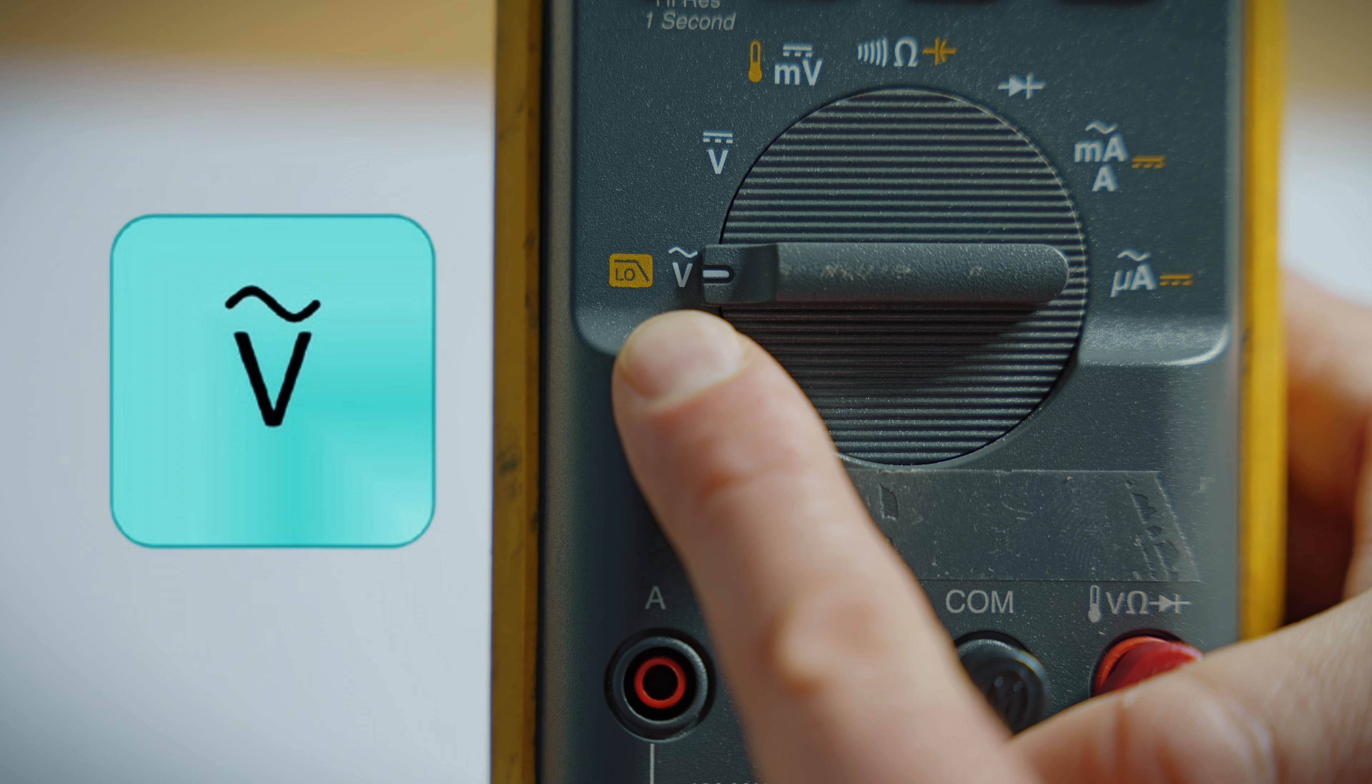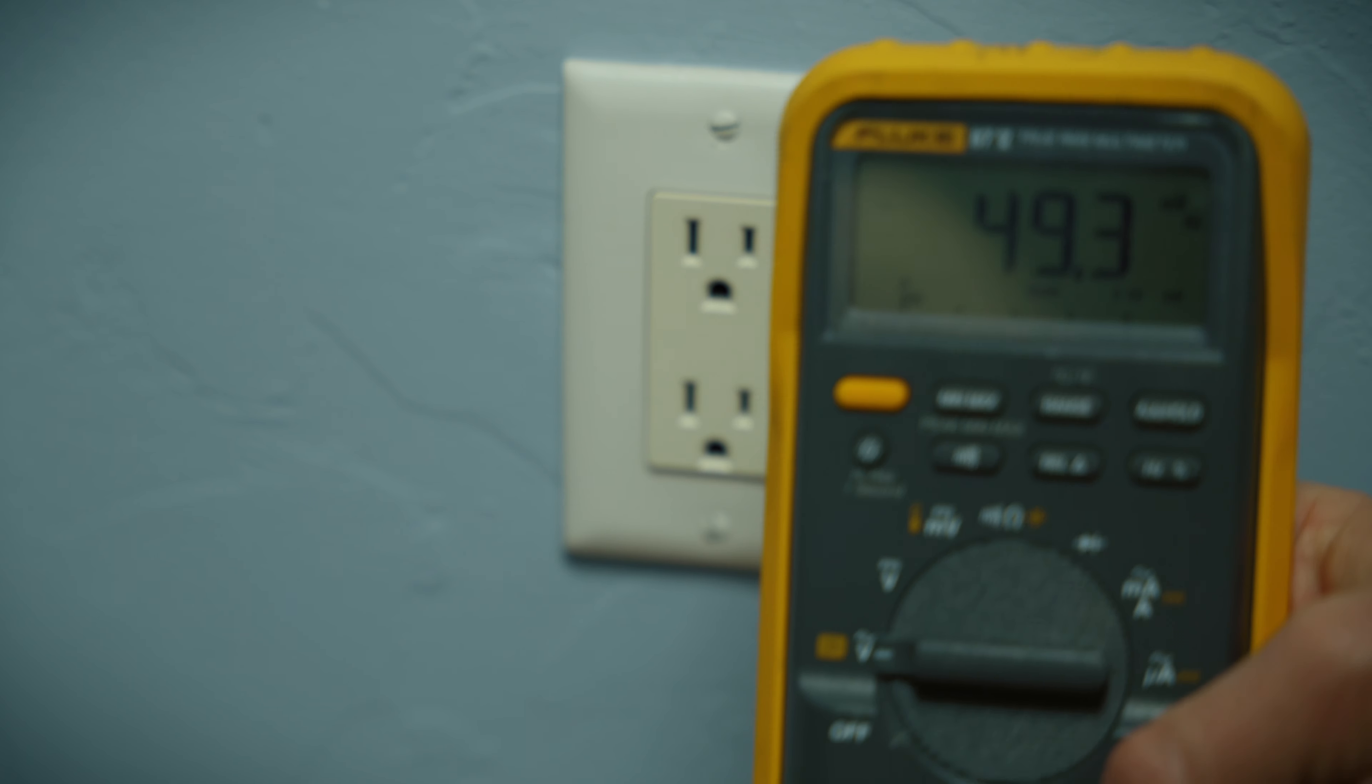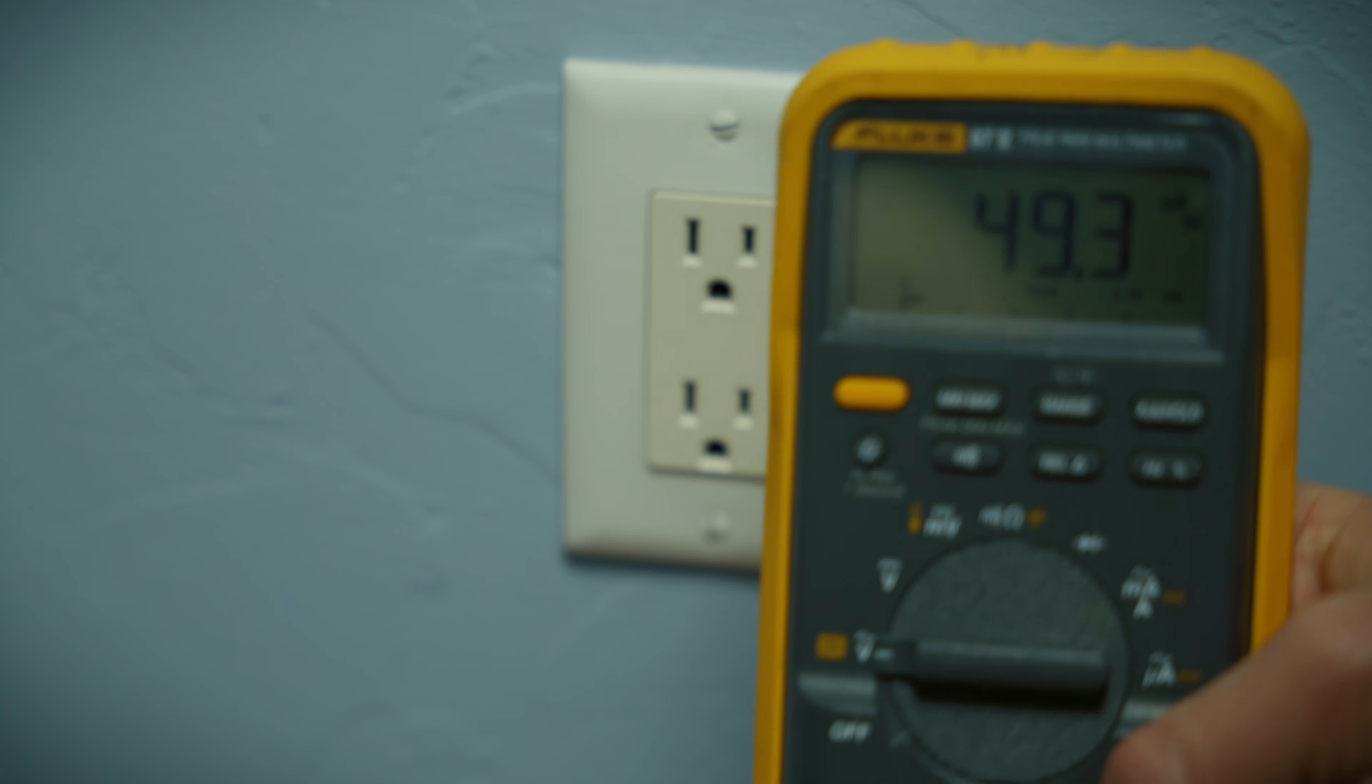The first setting we're going to try out is the volts AC. Voltage is represented by a capital V such as that. And you see the wavy line above the V, that means it's alternating current or AC.